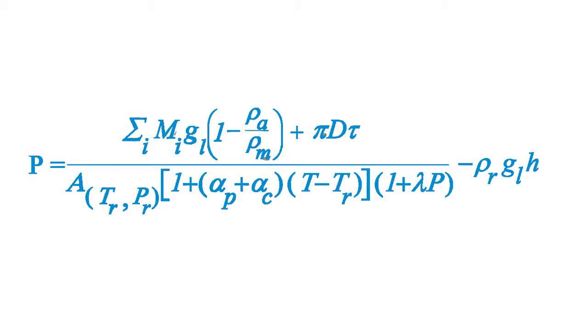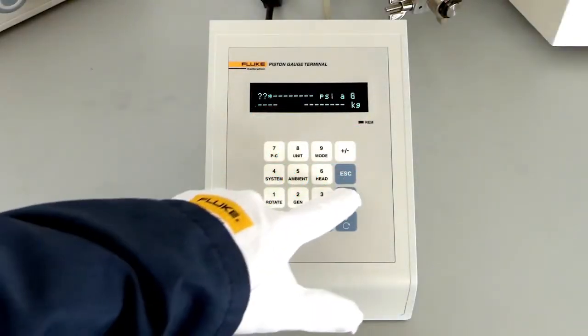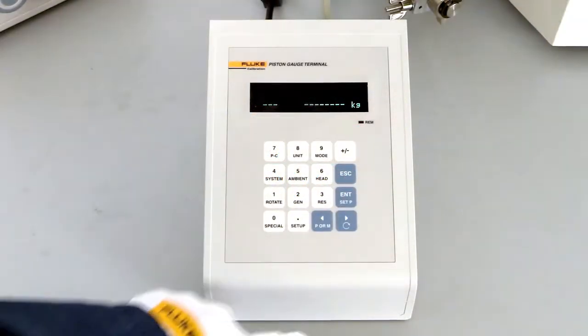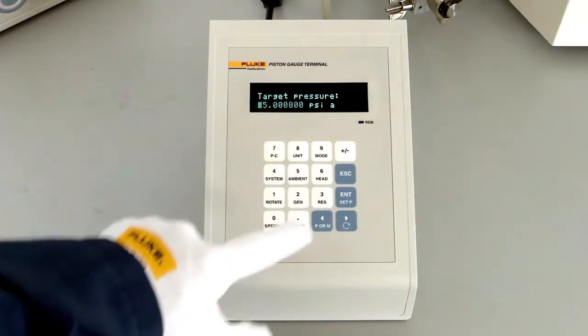When using a pressure balance, there are two extremes in the approach you can take to determining the pressure. The first extreme is to measure each variable that impacts the pressure and perform a full calculation of the fundamental pressure equation.